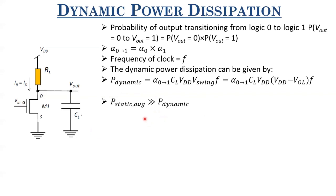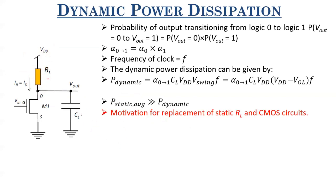Static power dissipation is highly undesirable. The passive resistor RL dissipates heat whenever current passes through it. What people tried to do was replace this static passive RL with a dynamic MOSFET-based switch, where the resistance is a function of the input and does not dissipate static power when the output is at stable logic 1 or stable logic 0. This was a major motivation for MOSFET-based implementation of RL.